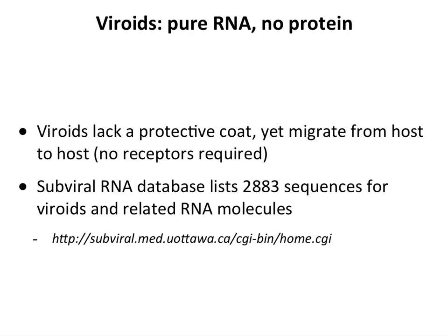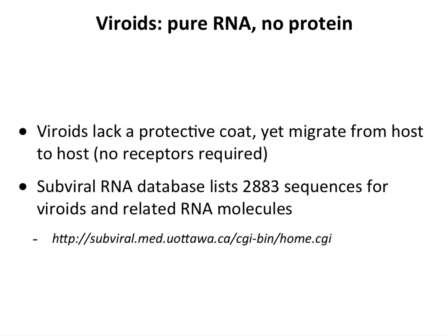Viroids are very interesting — they consist only of a genome with no virion coat surrounding them. They migrate from host to host as naked nucleic acid and don't need any receptor to get into cells. So far, 2,883 different viroids have been identified, and their sequences are kept in a database. These for the most part represent unique isolates.